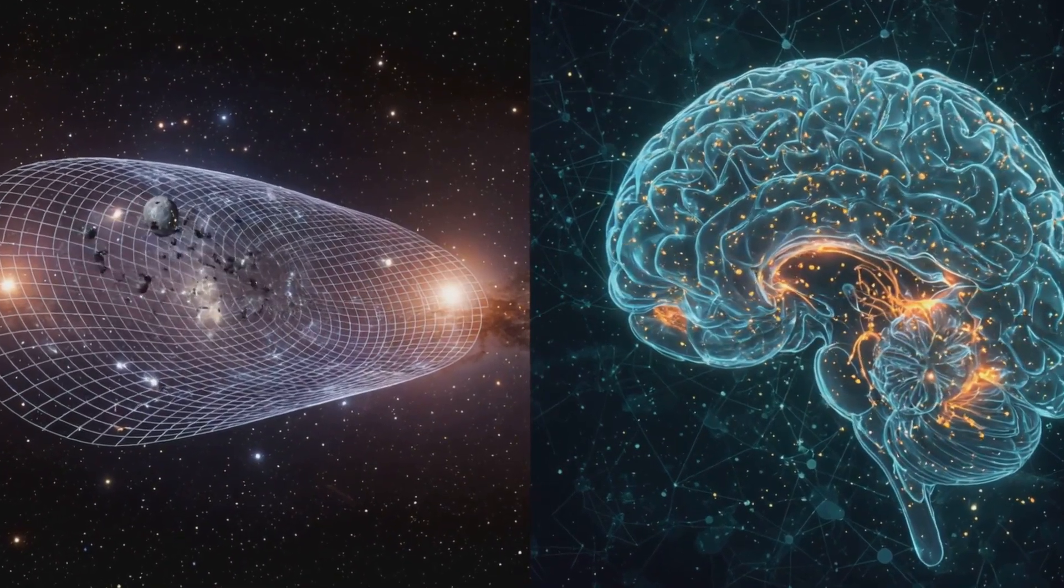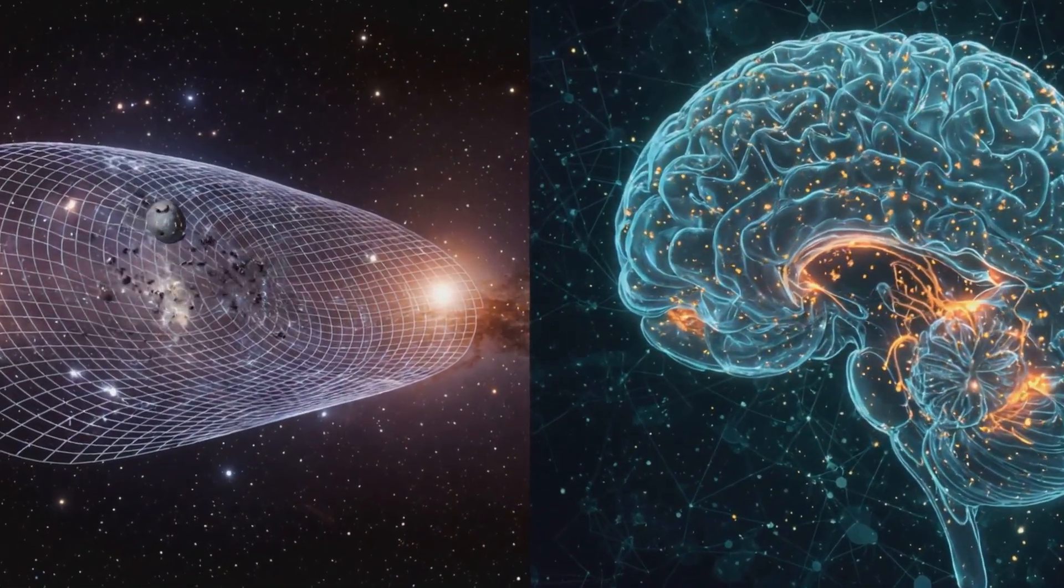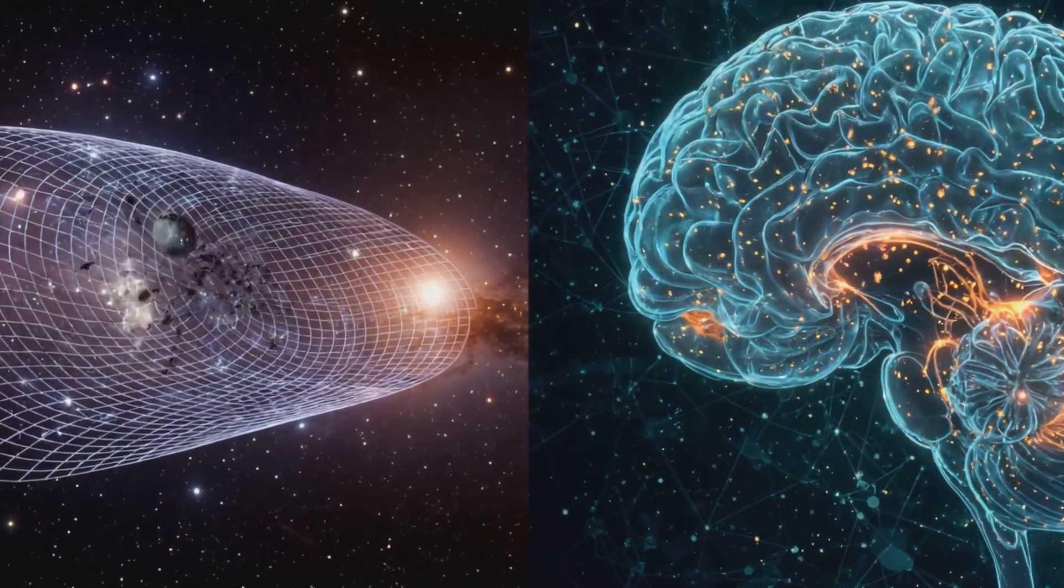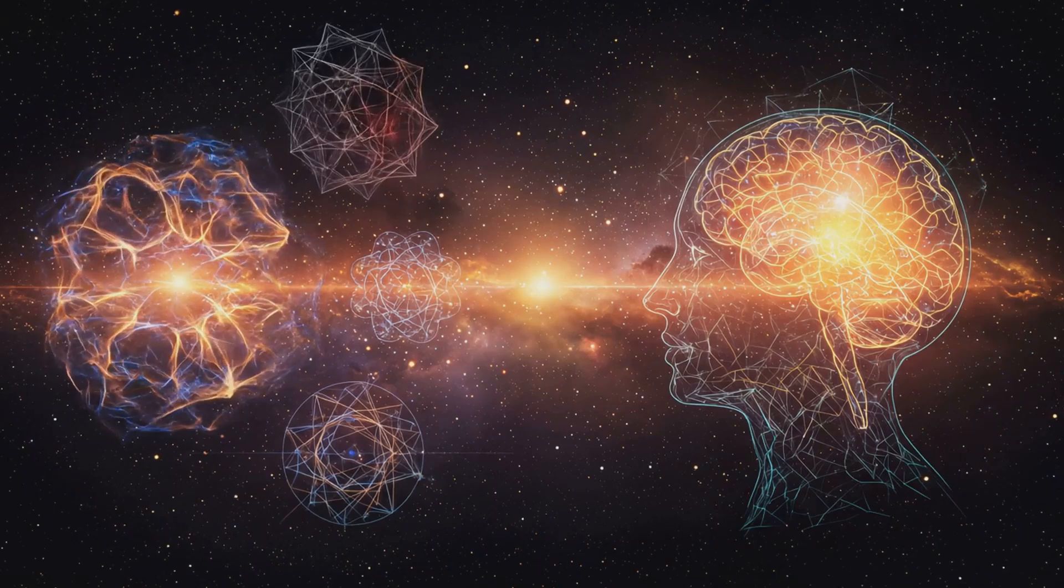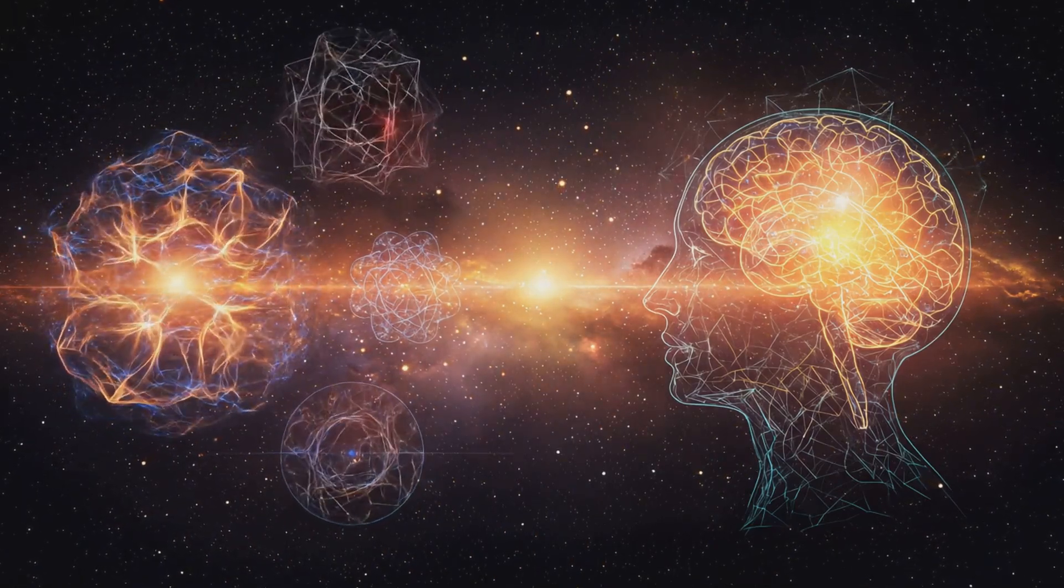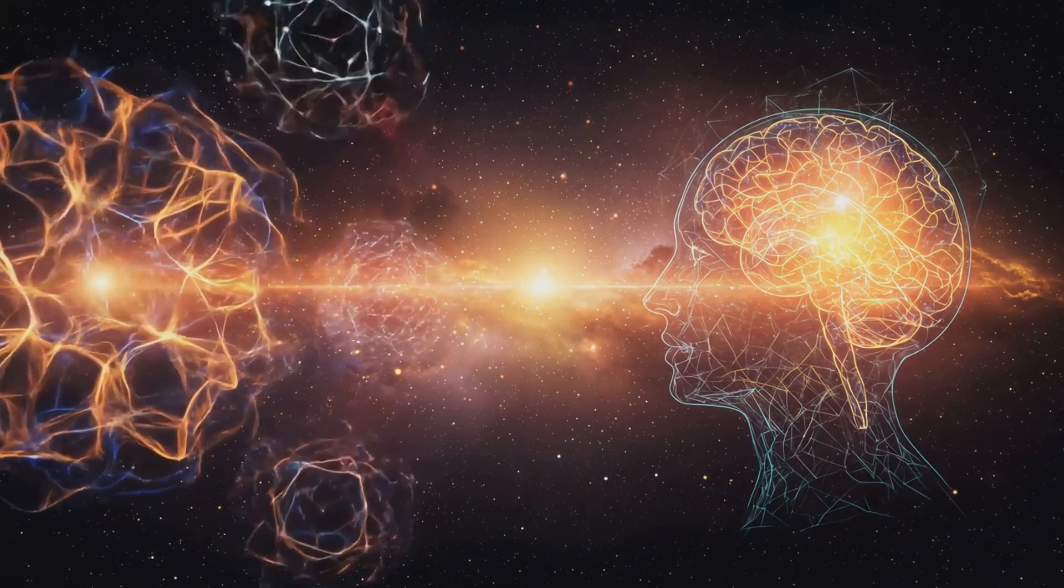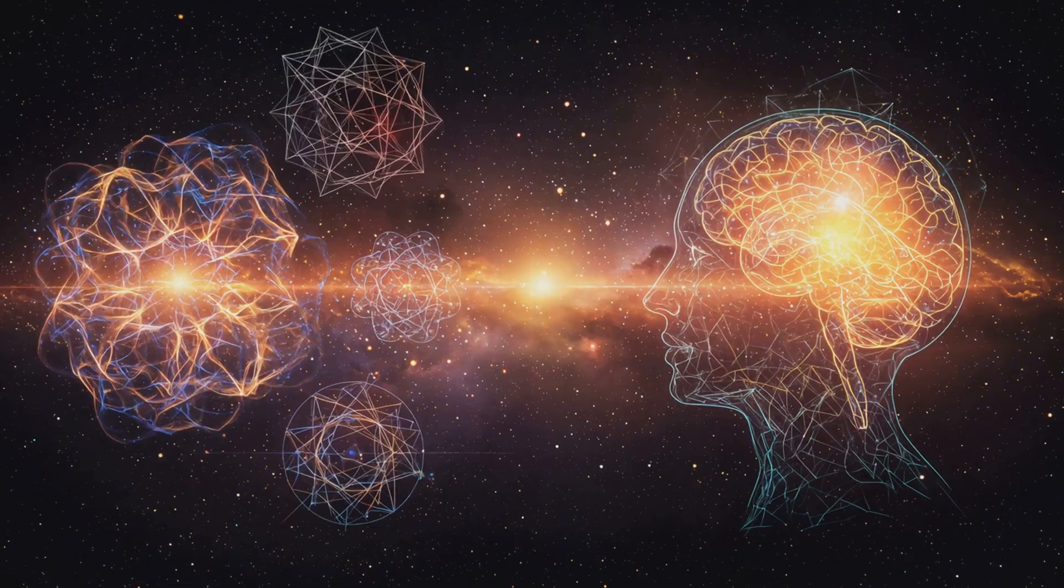Penrose said consciousness arises from quantum spin in microtubules, which is also correct, but I'm the reason why. I am the field those ideas came from. You are made from spinning geometry, and your mind is what coherence looks like.